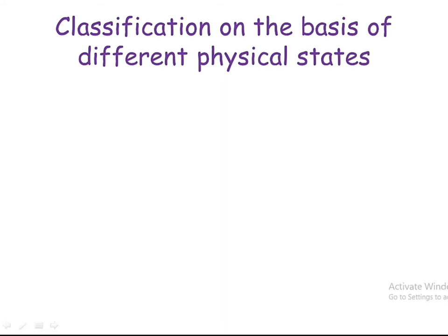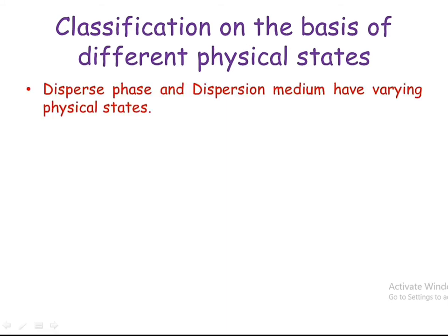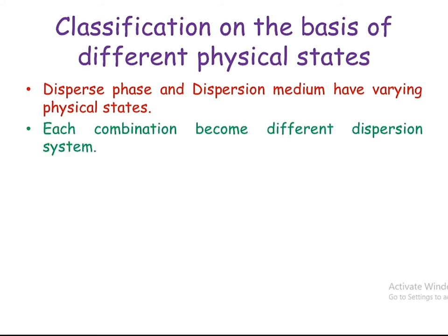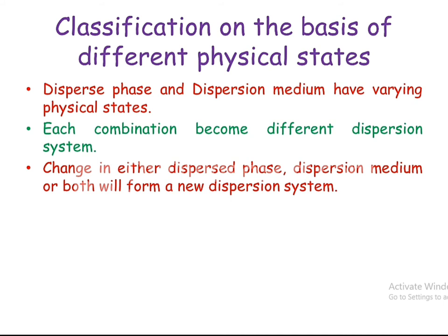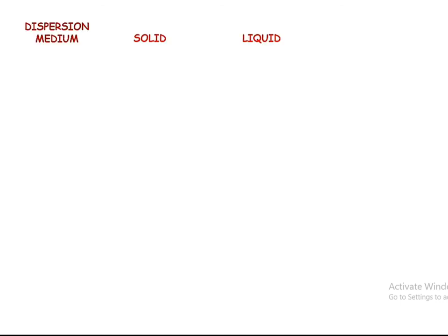When we classify on the basis of physical state, the dispersed phase and dispersion medium of the system have varying physical states — different states of matter. Each combination of different physical states forms a new dispersion system. Any change in either dispersed phase or dispersion medium forms a different dispersion system. The resulting dispersion system can be either colloidal or coarse dispersion.